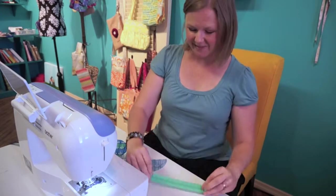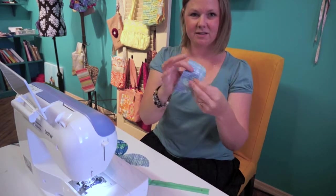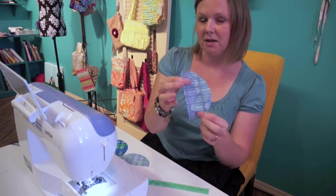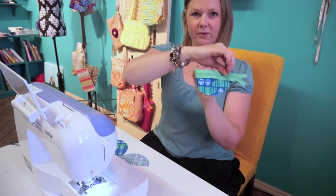You want to start out with the zipper and then take the fabric with the right side. This is the wrong side because it doesn't have the bright colors. So you want to make sure the right sides are facing one another.